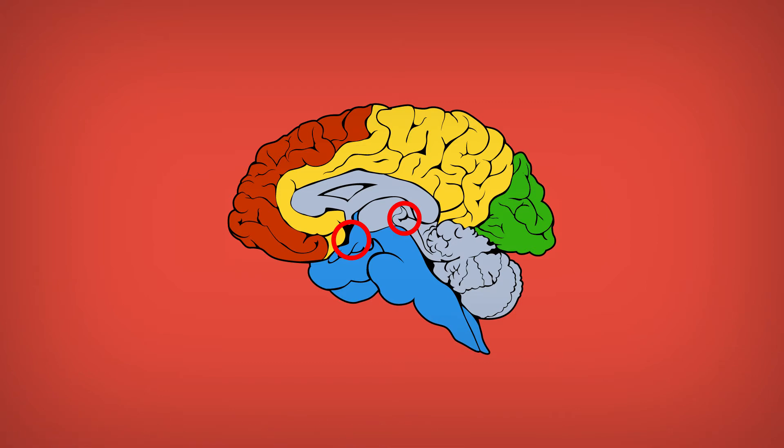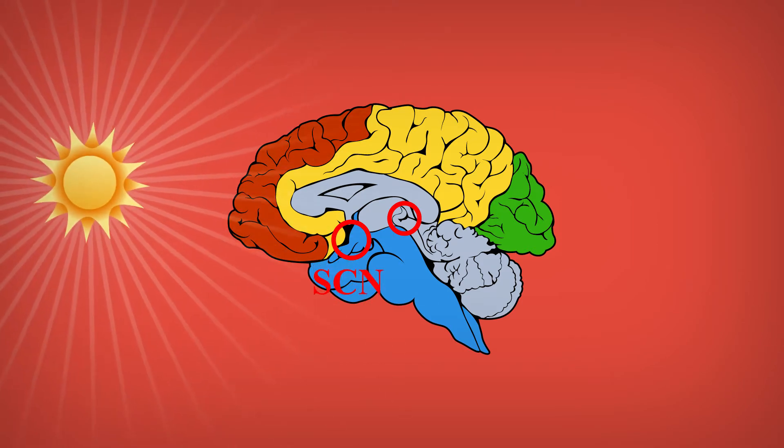In other words, a part of the hypothalamus called the SCN is a clock influenced by light reception.